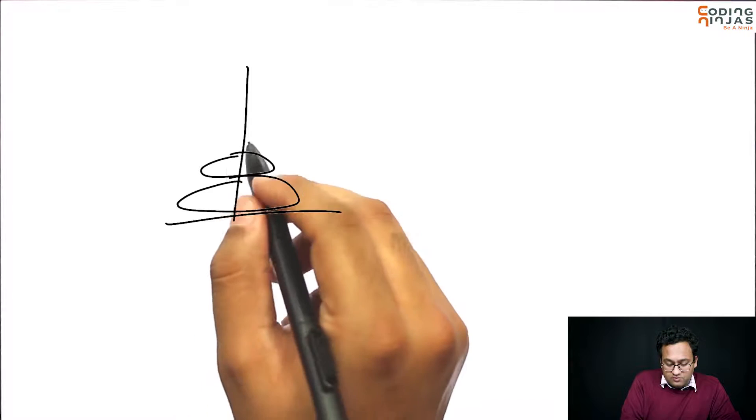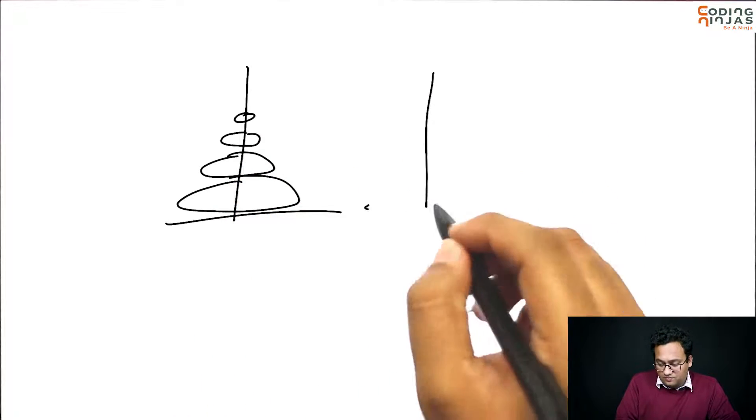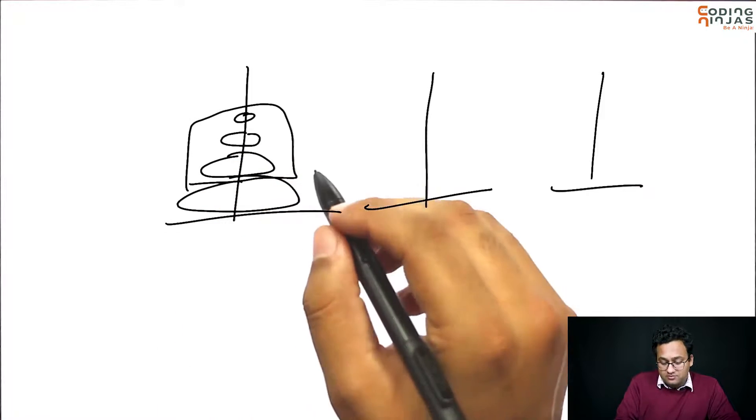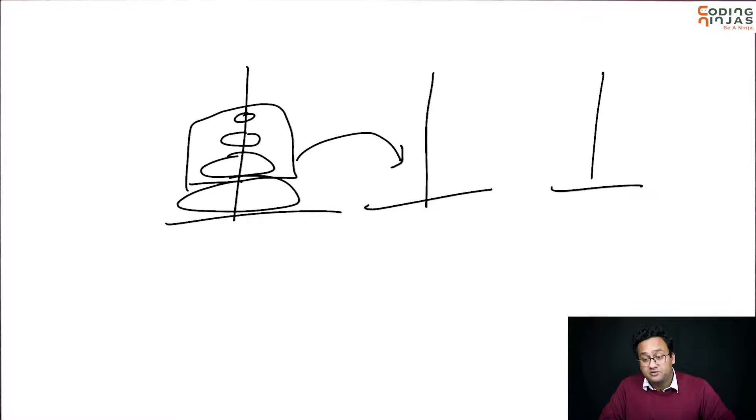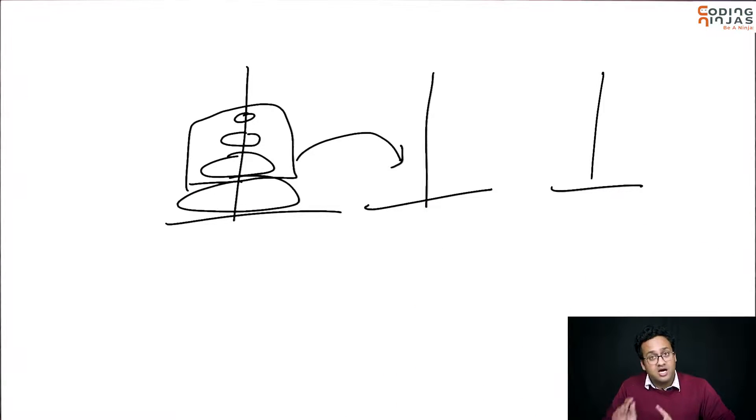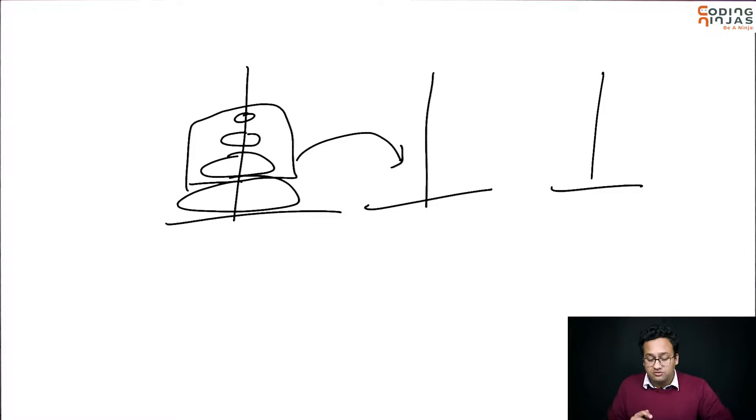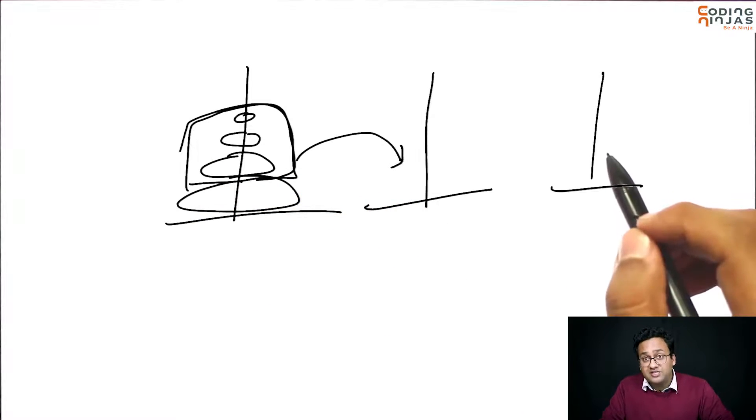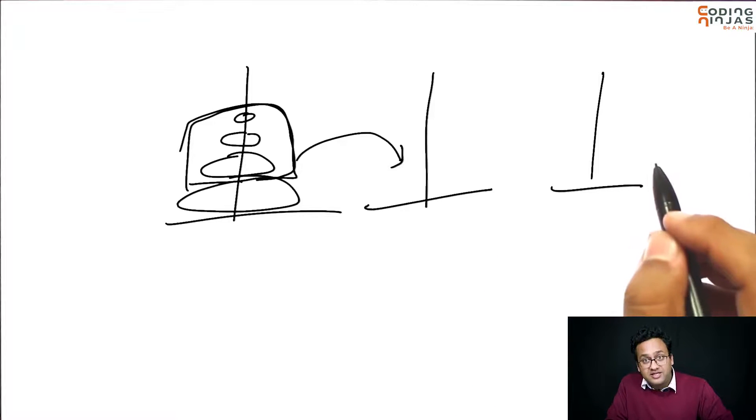So, what is going to work? We can do something like this. Let us move these n minus 1 to the helper using the destination. Helper is empty. Destination is empty. I can move n minus 1. That is not an issue. So, I can move n minus 1. But instead of moving to destination, I am moving to helper using the destination.